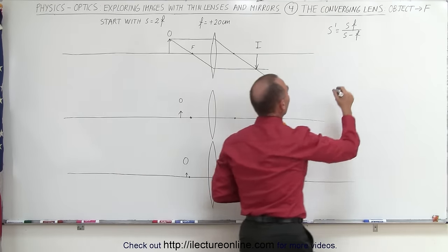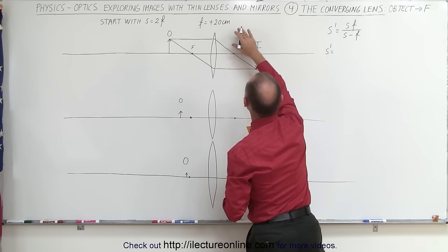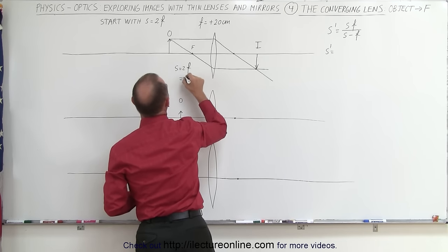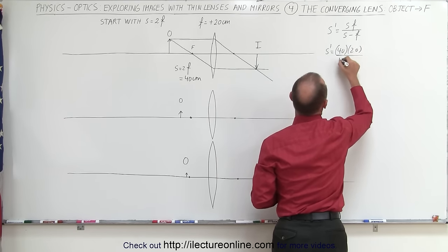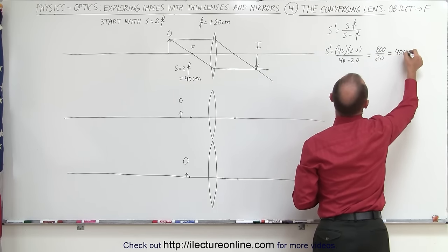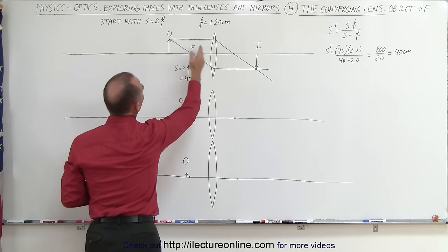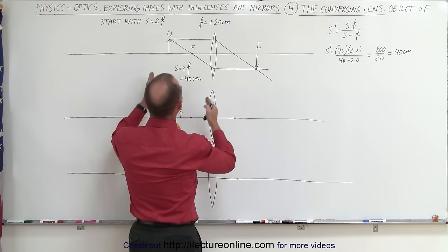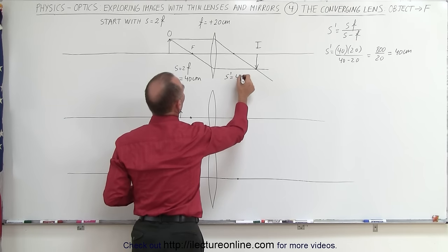Using the equation S' = SF / (S − F), with a focal length of 20 centimeters and S equal to 2 times the focal length, which is 40 centimeters: S' = (40 × 20) / (40 − 20) = 800 / 20 = 40 centimeters. That means if you place the object at exactly twice the focal length from the lens, the image will also be twice the focal length away — S' is also 40 centimeters.